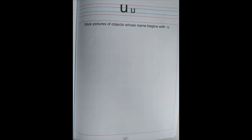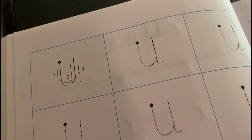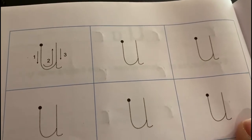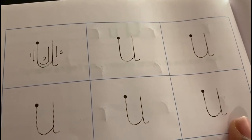Parents, kindly assist the child and write today's date on top of the page. Now children, on this page you have to stick pictures of objects whose name begins with U. It's a blank page with U written on top. You are going to cut pictures with the help of your mama and stick them — but they have to only begin with letter U.